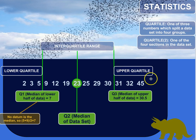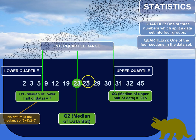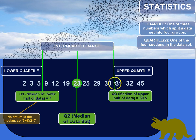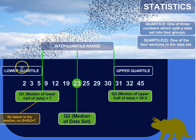You can also call the fourth range of data the upper quartile. Q3 is either that number — which is the median of the upper half of the data, in this case 30.5, because I have an even number of values in the upper half, so I take the two middle numbers and find their mean — or you can call all the numbers in that fourth section the upper quartile. The lower quartile is the median of the lower half of the data, or the lowest section cut off by that median, which is 7 in this case.